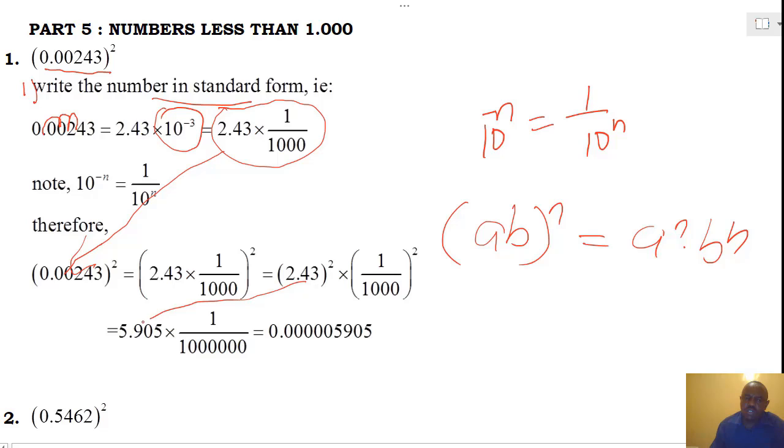And the first value, we read it from the table and we get 5.905. The second value, we multiply it directly. Hence, our final value becomes 0.000000905.